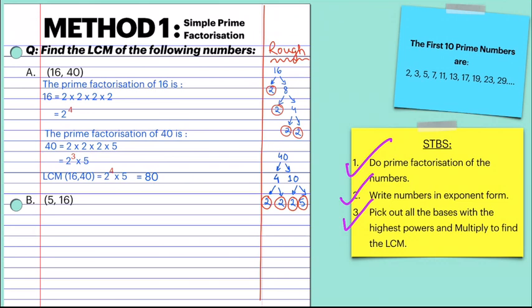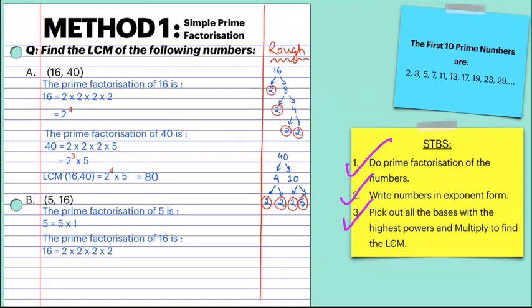Let's look at the second example: 5 and 16. 5 is already a prime number, so we write 5 equals 5 into 1. For 16, the prime factorization is 2 into 2 into 2 into 2, which we have already done. In exponent form this becomes 2 to the power 4. For the number 5, we don't write exponent form because it is only multiplied once.